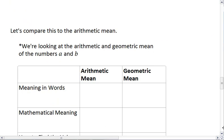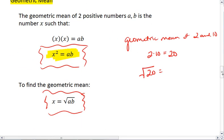Use your calculator, you find that that is approximately 4.47. So the geometric mean of 2 and 10 is 4.47.